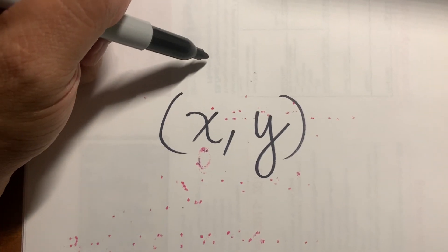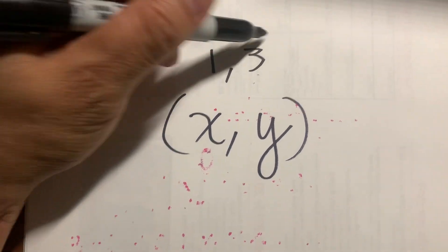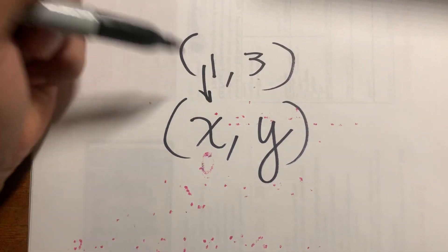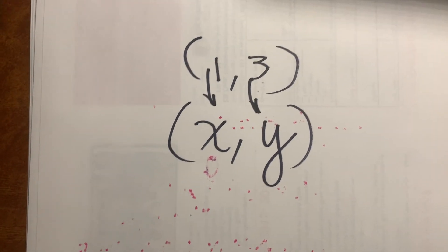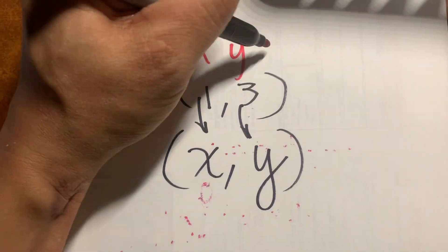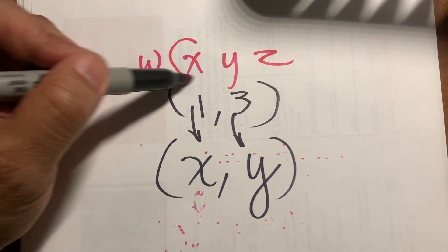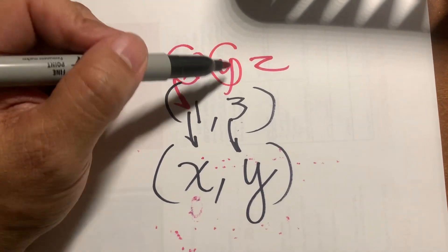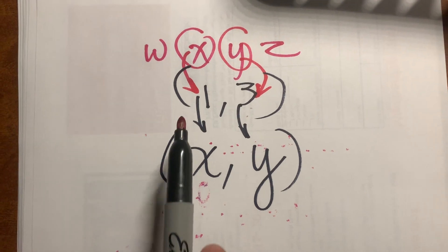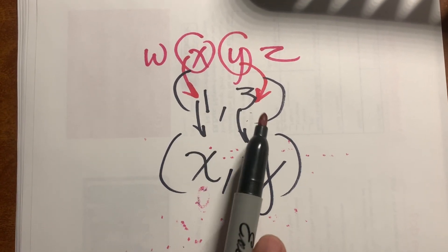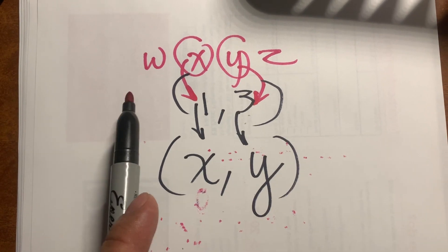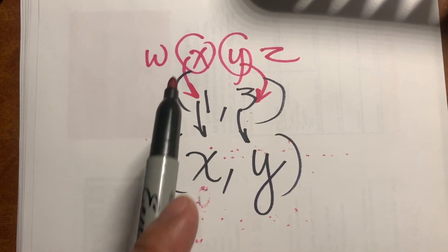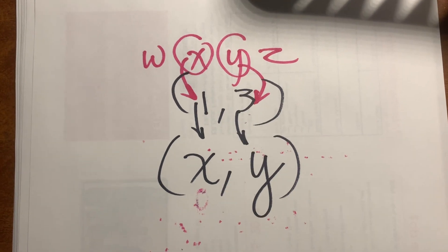Whenever we see a coordinate point like one, three, we know this is the X and this is the Y. So that you won't forget, think of the alphabet. W, X, Y, Z. So, follow the correct order. The first one is the X, the Y should always be the last. So, this is the X and this is the Y. It cannot be W, Y, X, Z. But, W, X, Y, Z. Therefore, you go first, then you're next.